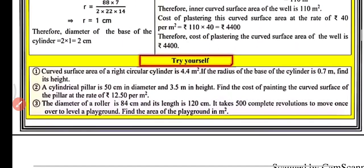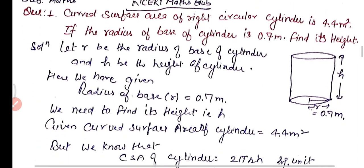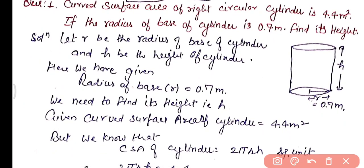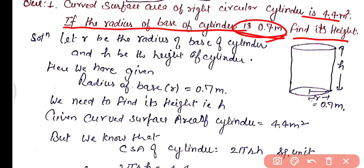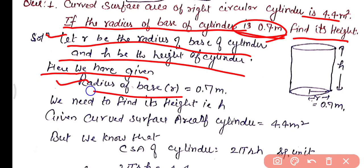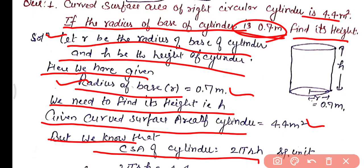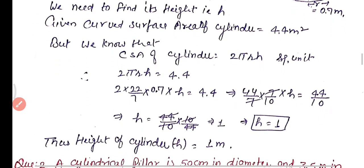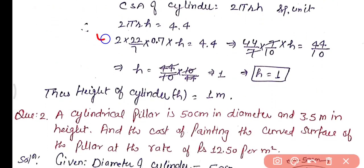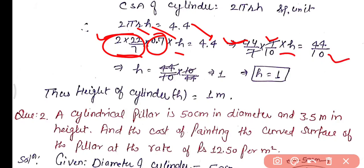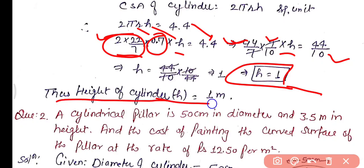Practice Question 1: The curved surface area of a right circular cylinder is 4.4 m². If the radius of the base is 0.7 m, find the height. Given r = 0.7 m and CSA = 4.4 m². Using 2πrh = 4.4, substituting π = 22/7 and r = 0.7 (written as 7/10), and simplifying, we get h = 1 m. The height of the cylinder is 1 meter.